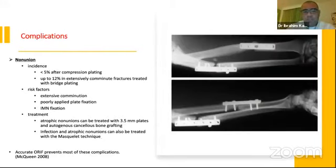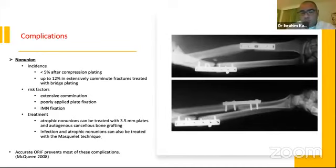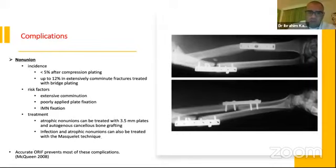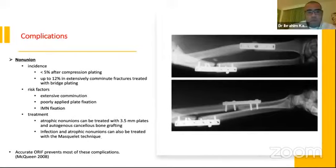Regarding complications: non-union — the incidence is not too high, less than 5% after compression plating. In comminuted or open fractures treated with bridge plating or relative stability, the non-union rate is a bit higher at about 12%. Extensive comminution and poorly applied plate fixation are key factors, and technique is critically important to achieve union. Intramedullary nailing also increases non-union risk due to lack of compression at the fracture site.